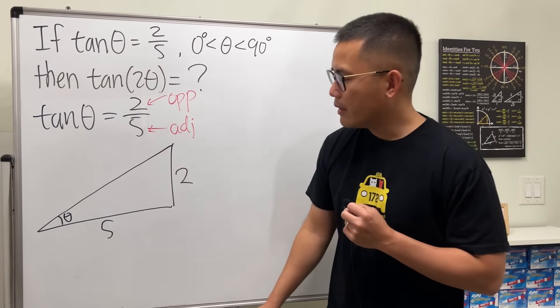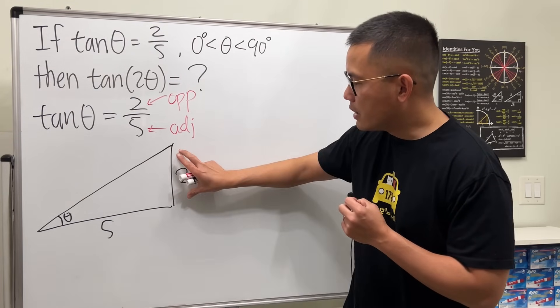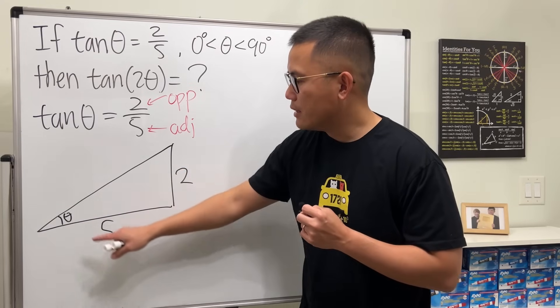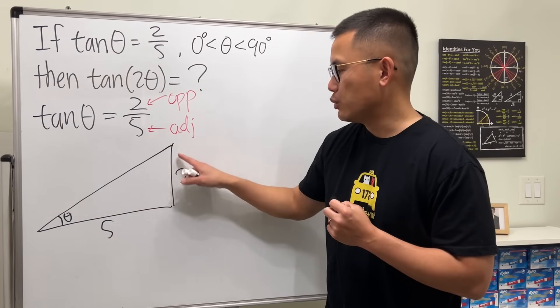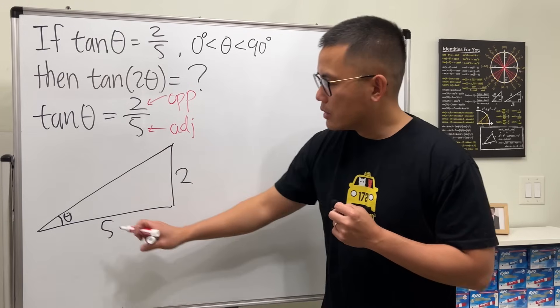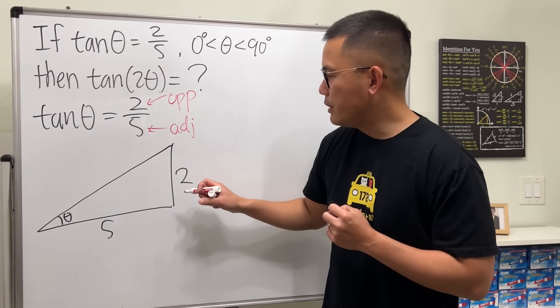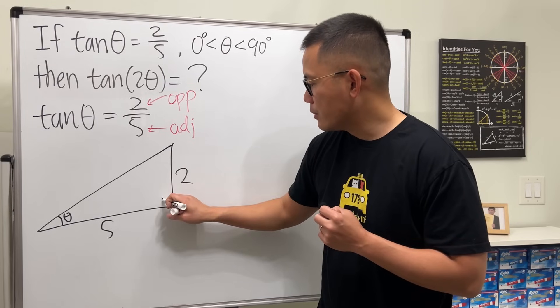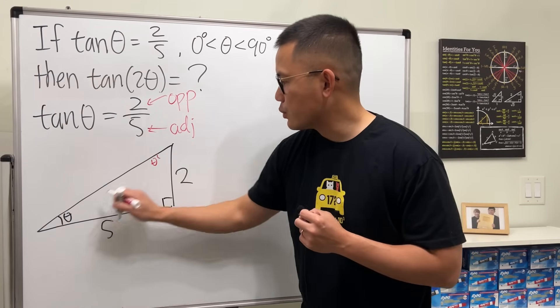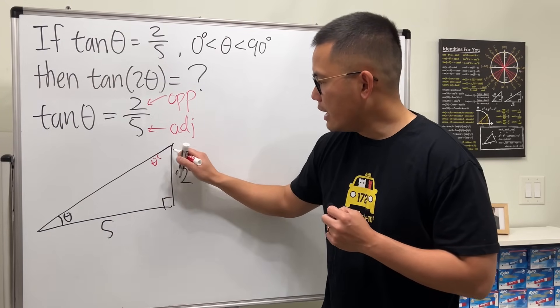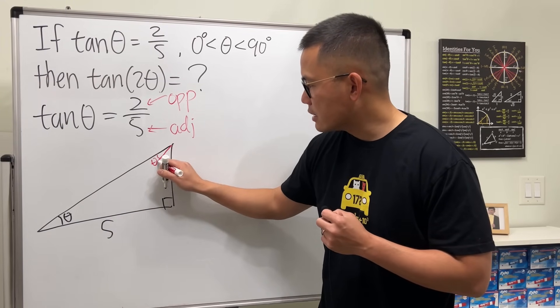But what do we mean though? Firstly, you can see that because we have 2 over 5, so this angle will be less than 45 degrees, otherwise it would be like 1:1, right? So I'm going to use this bigger angle. I'm going to duplicate that. I will say this is the angle θ as well, and then I'm going to just connect like this.